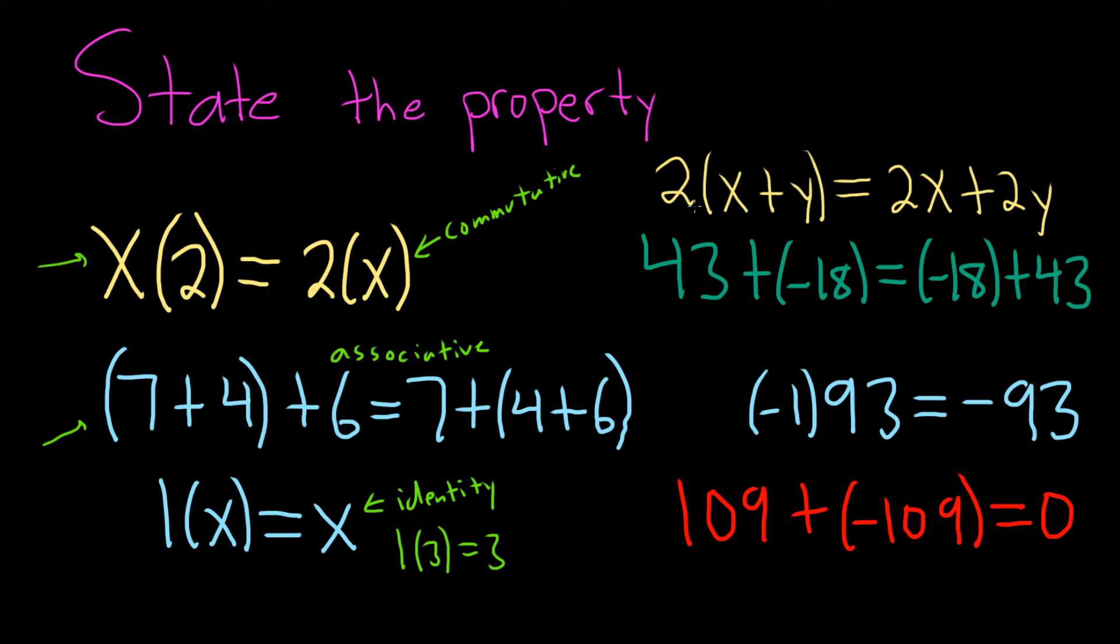This one here is really powerful. We have 2 times parentheses x plus y equals 2x plus 2y. In this case, we say 2 distributes over the sum x plus y. This is called the distributive property.